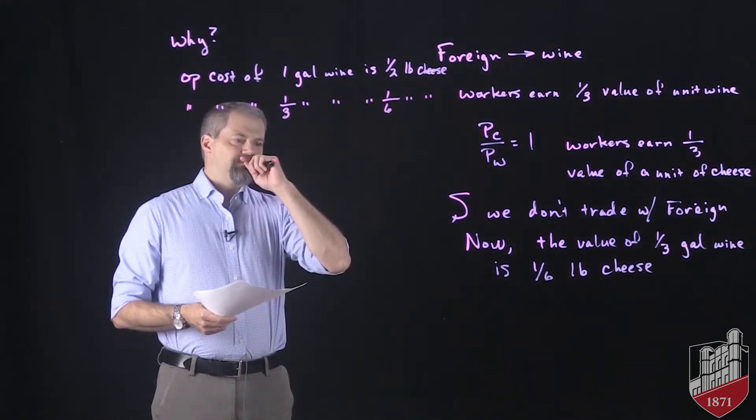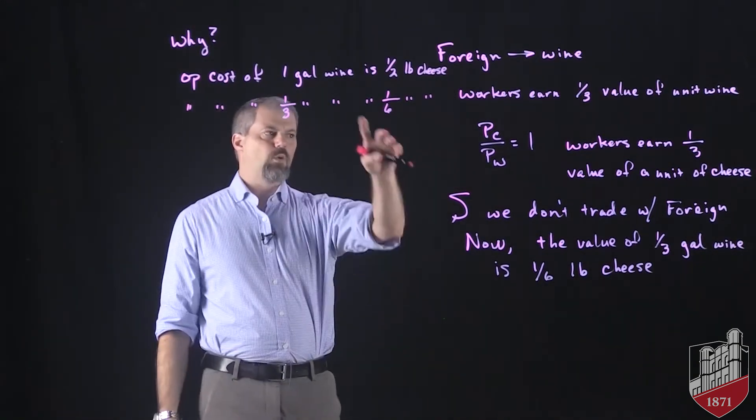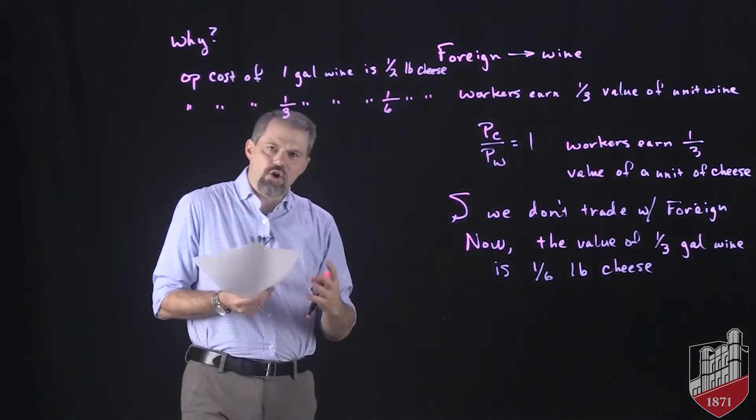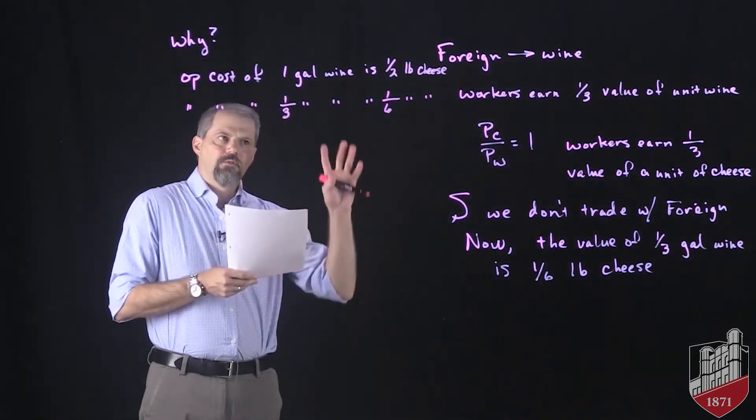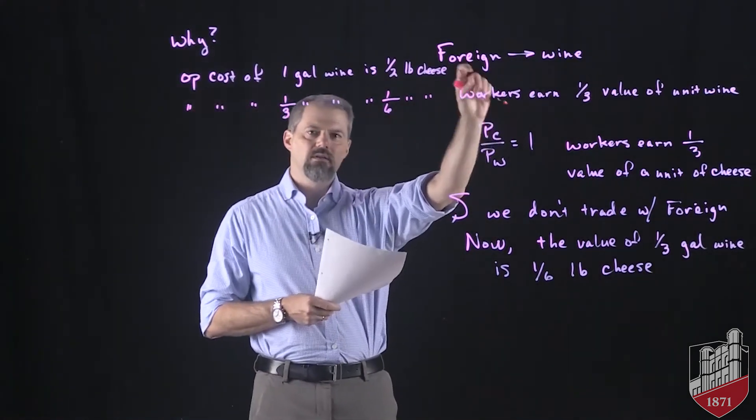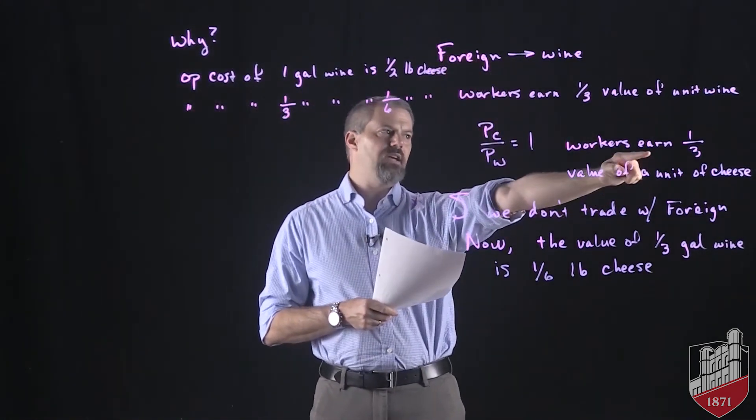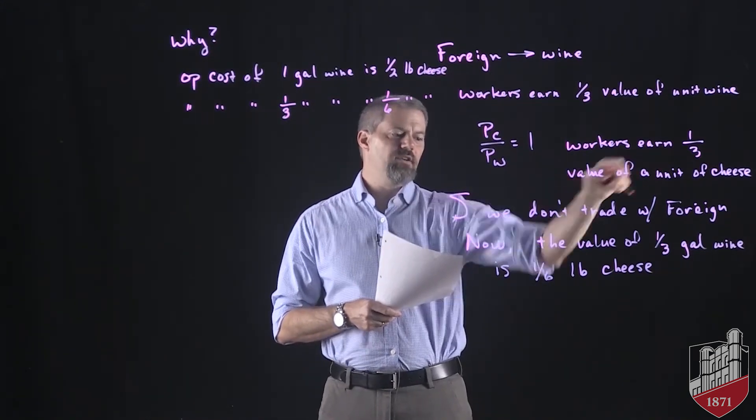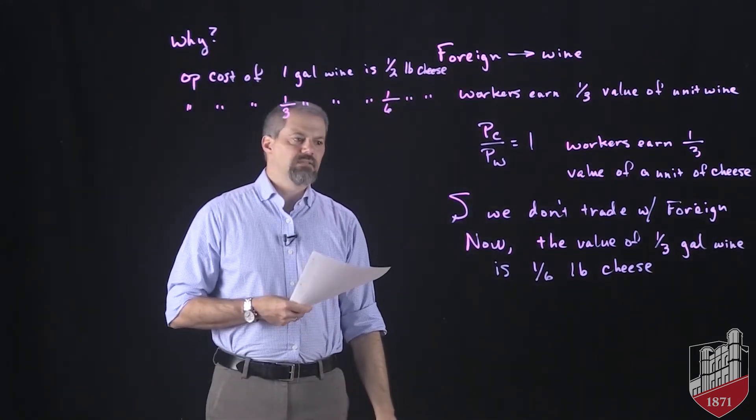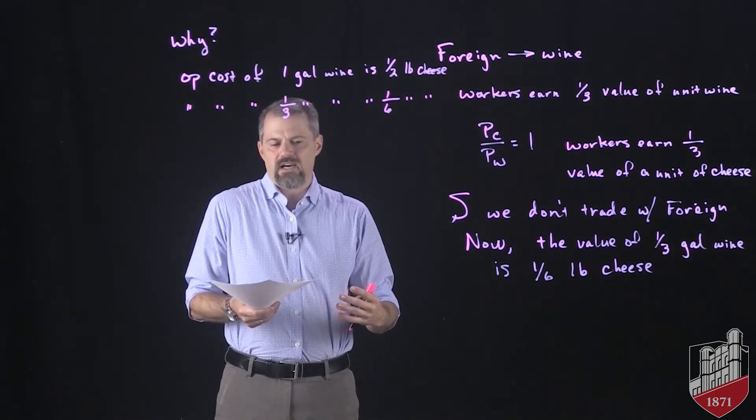What that means is that the wage for workers is going to be cut in half, right? What they earn, if foreign doesn't trade with home, what foreign workers, the condition that they're in is that their wage goes from one-third to one-sixth of a pound of cheese. So their standard of living is cut in half.